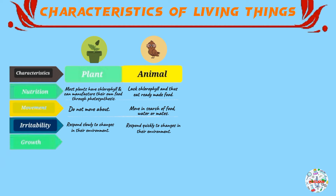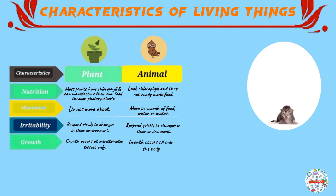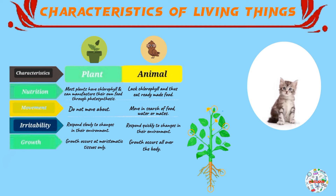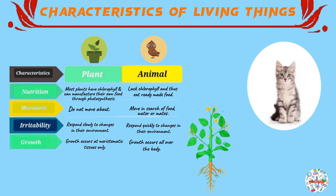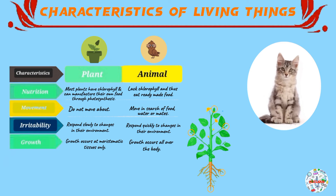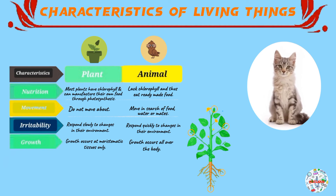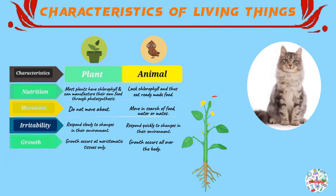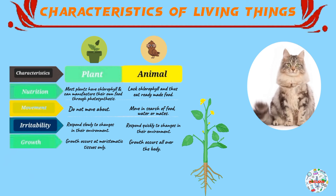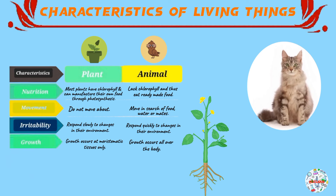Moving on to our next characteristic: growth. In plants, growth only occurs in meristematic tissues, while in animals, growth occurs all over the body. Animals grow all over their body. But when it comes to plants, plants grow in certain parts of their bodies where there are tissues known as meristematic tissues — tissues involved in growth, found at the tips of the shoots and at the tips of the root. This is where maximum growth takes place.